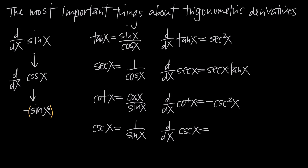We can recognize that negative sine of x is just negative 1 times sine of x. We already know the derivative of sine of x is cosine of x. So if we take the derivative of negative sine of x, we get negative cosine of x, because that negative 1 stays out in front as a constant coefficient.